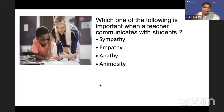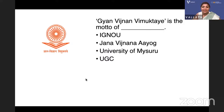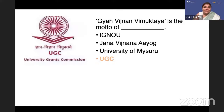Which one of the following is most important when a teacher communicates with students: sympathy, empathy, or animosity? Animosity is negative, so it must be empathy — and Ankita agrees. Next question: 'Jana Vidya Vijnan Aayog' — whose motto is this? Is it IGNOU, UGC, or the University of Mysore? The answer is UGC — a logo that dominates our academic lives.